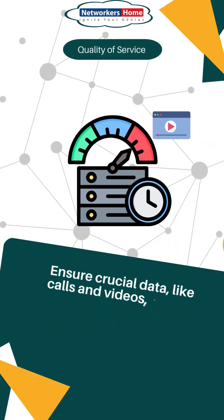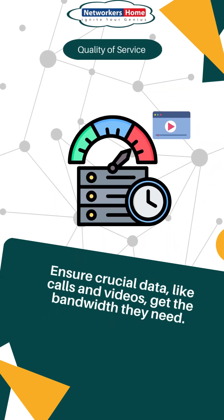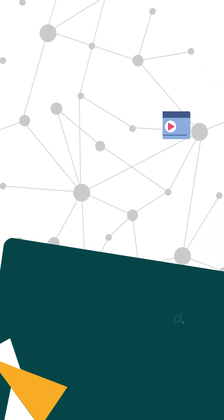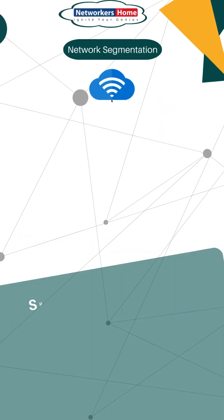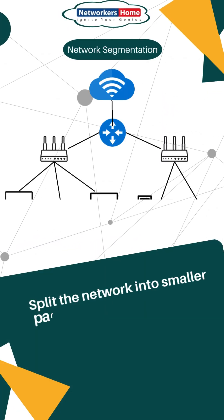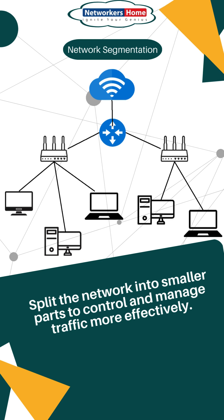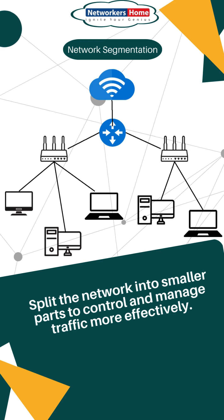Quality of service: ensure crucial data like calls and videos get the bandwidth they need. Network segmentation: split the network into smaller parts to control and manage traffic more effectively.